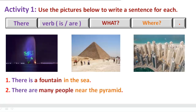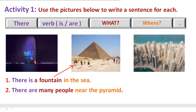Sentence number 2: There are many people near the pyramid. In this picture we see the pyramid and many people are here and there around it. So we start the sentence with 'there are many people'. And where are the people? Near the pyramid.